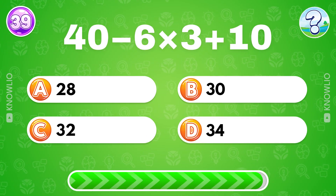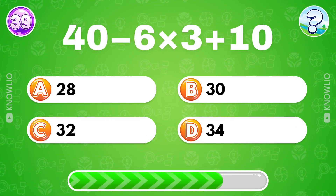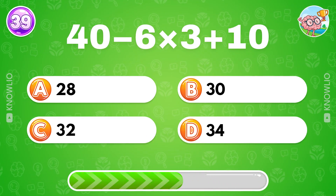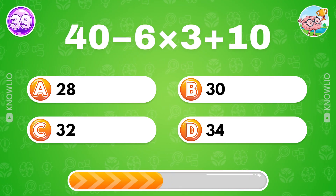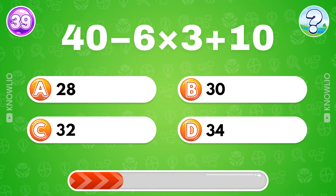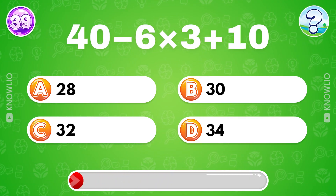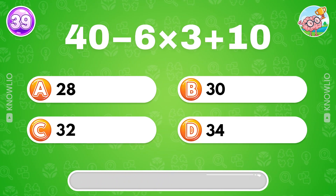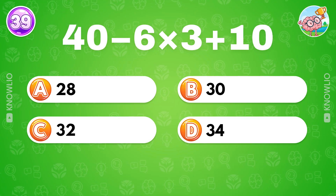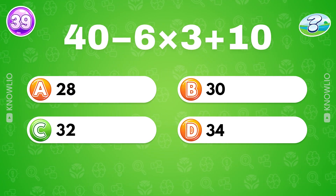What's the result of 40 minus 6 multiplied by 3 plus 10? Answer C: 32.